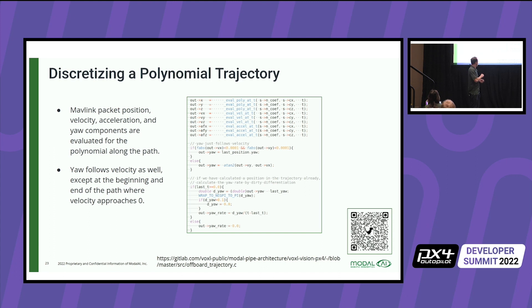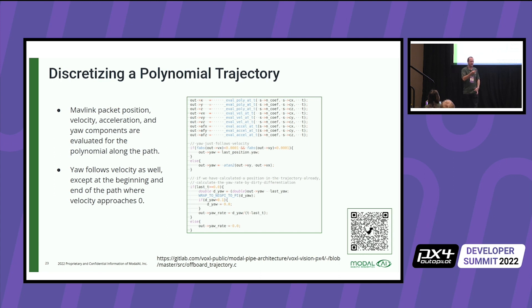You can find this piece of code at code.modalai.com — there's a QR code here as well. What we're basically doing is evaluating the x, y, and z polynomials for their position as well as velocity and acceleration, and sending all of those set points down into PX4, roughly 30 to 50 Hz, which is about reasonable for a nice smooth trajectory.